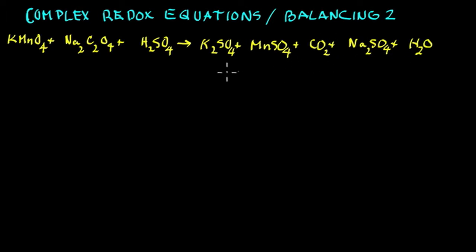The first thing we're going to do is show all the species, the operating species. In other words, they break down in solution. And you have potassium ions, permanganate ions, sodium ions, oxalate. Notice it's a 2- ion, 2 sodiums, 1+.